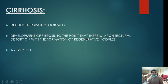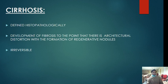Cirrhosis is always defined histopathologically — you need a biopsy to diagnose it. You cannot diagnose cirrhosis purely clinically or radiologically. It is defined as development of fibrosis to the point of architectural distortion with formation of regenerative nodules. Fatty liver and alcoholic hepatitis are reversible, but cirrhosis is always irreversible.